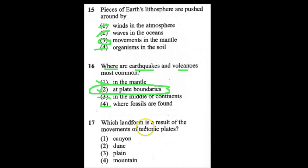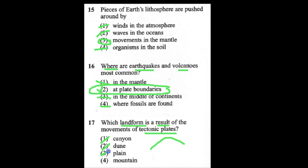Number 17: which landform is a result of the movement of tectonic plates? Canyon? No. Dune? No, that's usually caused by wind. A plain? That's a really low-lying field. A mountain? Yes — when the plates converge and combine, mountains happen. The answer is a mountain. Look for links for more helpful videos, and ask me any questions if you still need help with this topic.